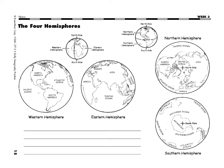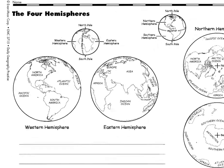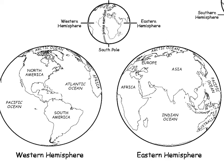If you look at the map here, we will look at the two pairs on the left side and the two pairs on the right side. As you can see from the pairs on the left side, we are looking at the East Hemisphere and the West Hemisphere.